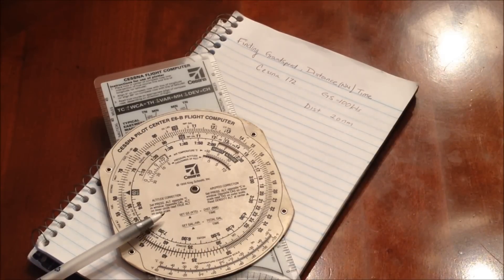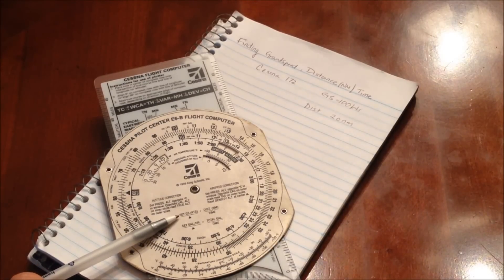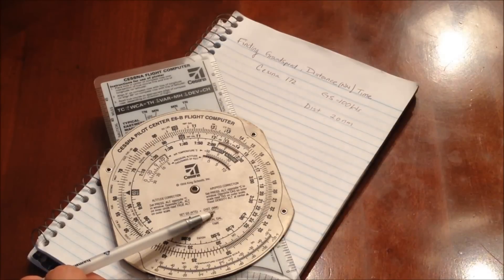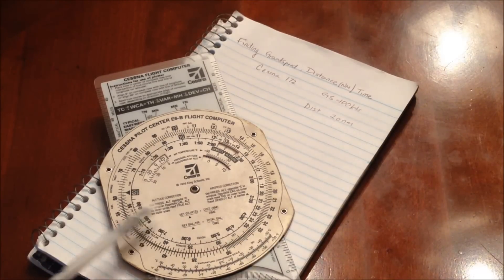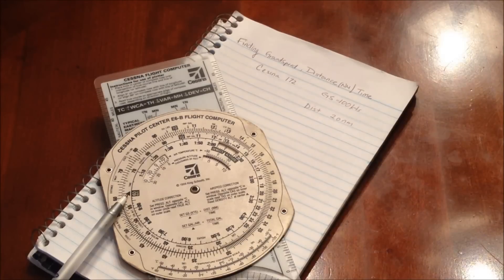On the bottom, they normally have this key, which shows how to find your set ground speed given either distance or time. Notice how we have this little black triangle here, and this black triangle is the same one that we have here.